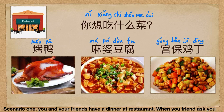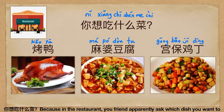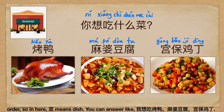Scenario 1: You and your friends have a dinner at a restaurant. When your friend asks you, 你想吃什么菜? Because in the restaurant, your friend apparently asks which dish you want to order. So here, 菜 means dish. You can answer like, 我想吃烤鸭,麻婆豆腐,公保鸡丁.